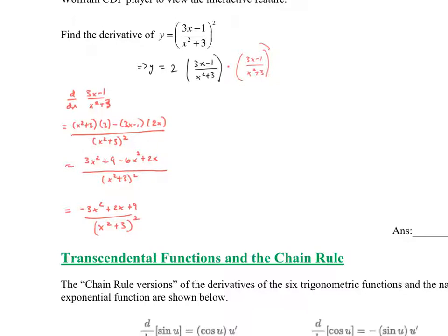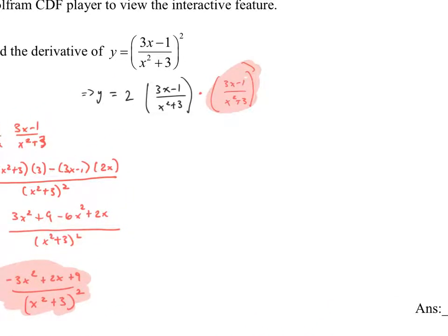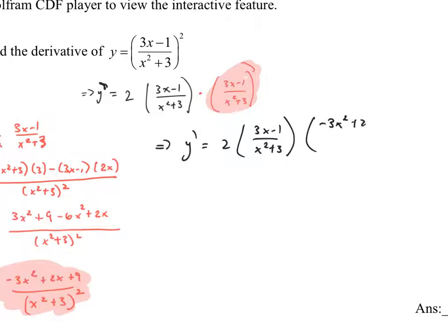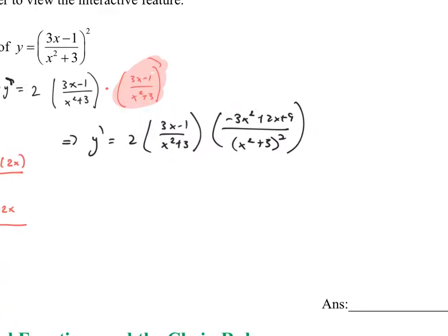We did all that work because we needed the derivative of the inside using the quotient rule, and now we plug it back into the main derivative. So y prime equals 2 times (3x - 1)/(x² + 3) times (−3x² + 2x + 9)/(x² + 3) squared. We can simplify: there's an (x² + 3) on the bottom and an (x² + 3) squared on the bottom, so combined that gives (x² + 3) cubed.